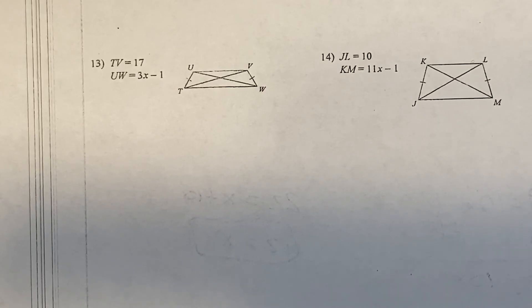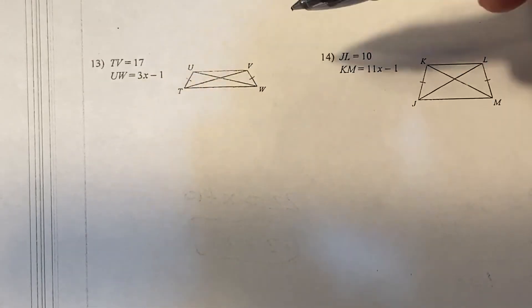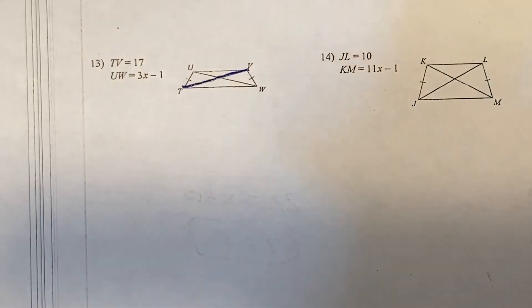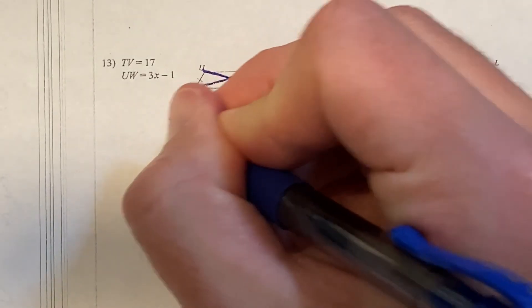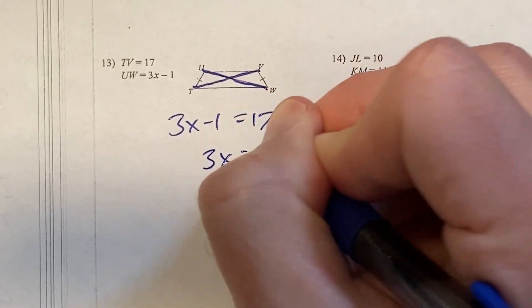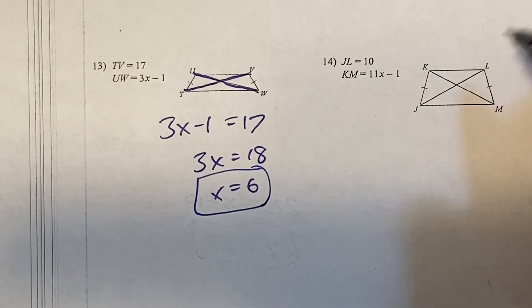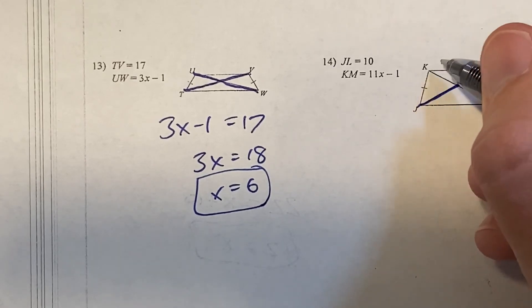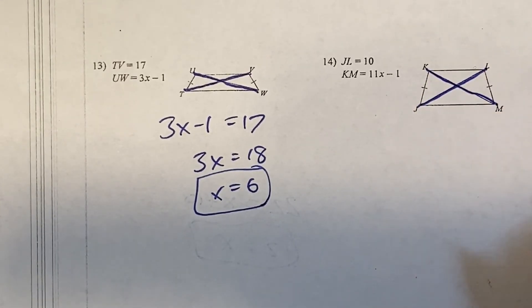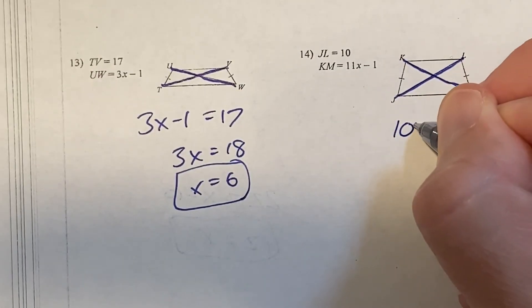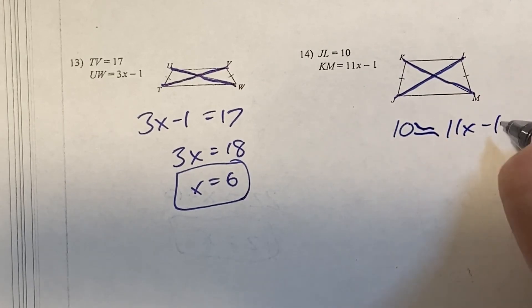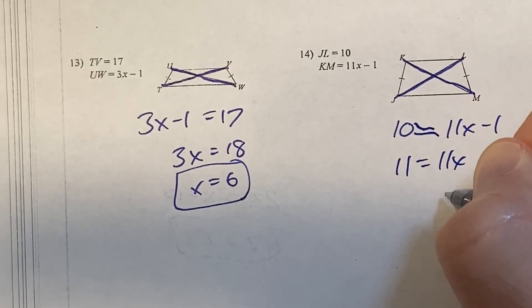Numbers 13 through 16 are all isosceles trapezoids, and their diagonals are congruent. TV equals 17; UW equals 3x minus 1. Since the diagonals are congruent: 3x minus 1 equals 17, add 1 to get 3x equals 18, divide by 3, x equals 6. For the next one: JL equals 10, KM equals 11x minus 1. So 10 equals 11x minus 1, add 1 to get 11 equals 11x, divide by 11, x equals 1.